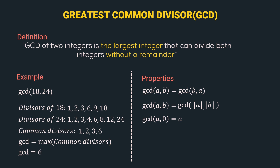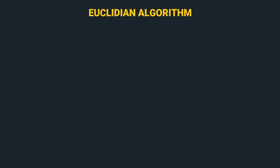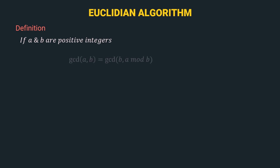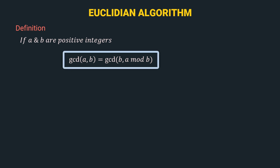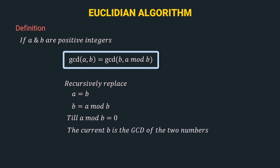Now we have understood what gcd is and learned its properties. We can move to the next topic: the Euclidean algorithm. If a and b are positive integers, then gcd(a, b) = gcd(b, a mod b). Here we recursively replace a with b and b with a mod b, and we repeat this until a mod b is equal to 0. In that case, the current b is the gcd of the two numbers.